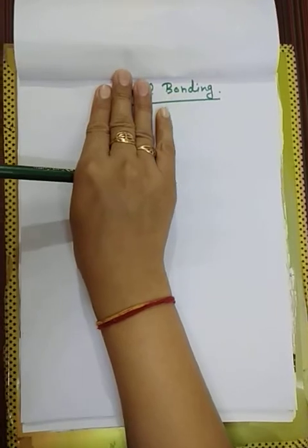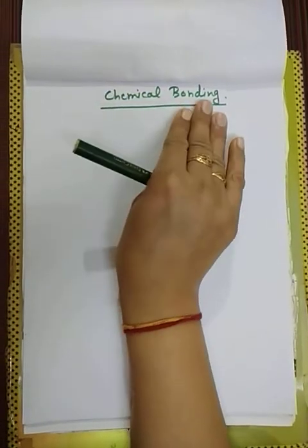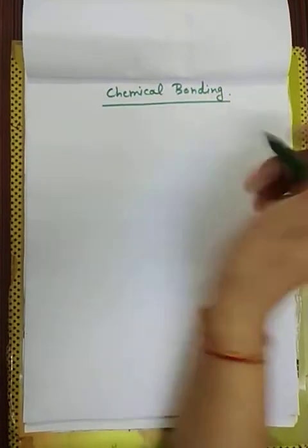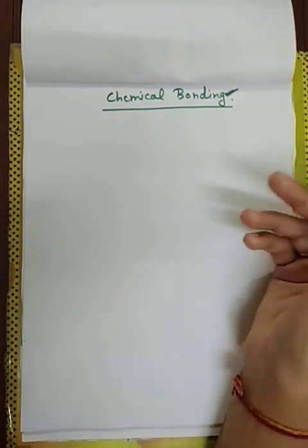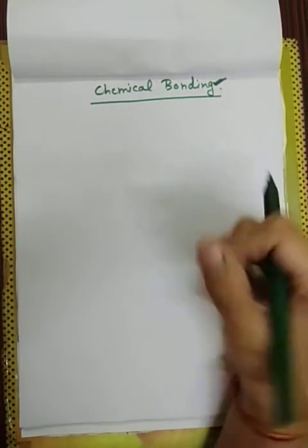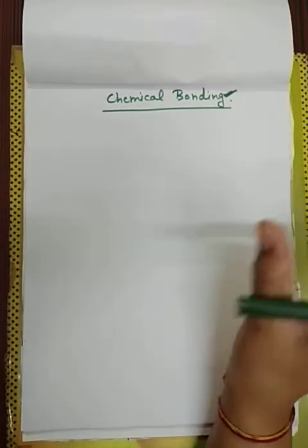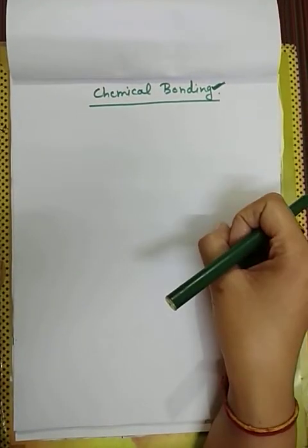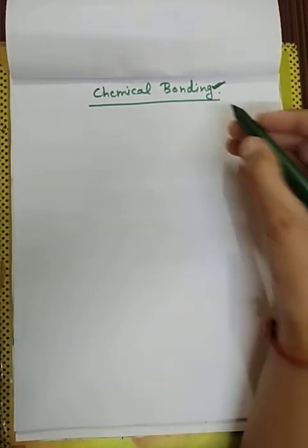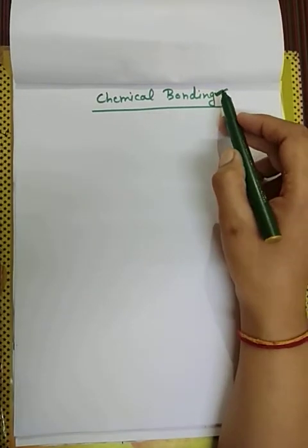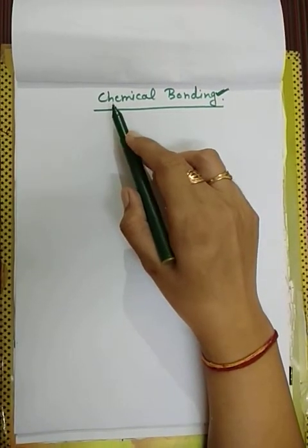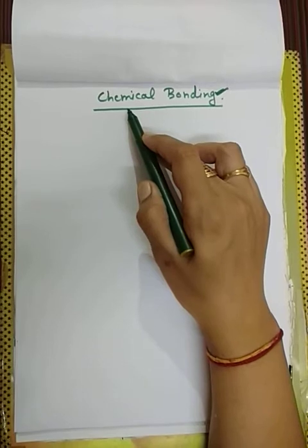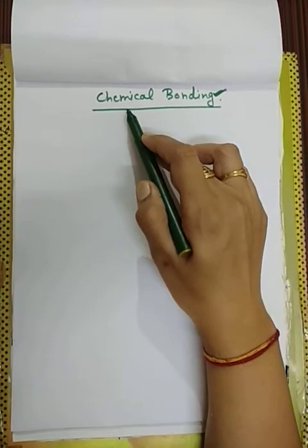If we remove the word 'chemical', we will only talk about bonding. So what is bonding? It means that it is interaction between two objects and two materials, and two or more things that are connected to each other — we call it bonding. If we apply this bonding to chemicals, that type of bonding is called chemical bonding.